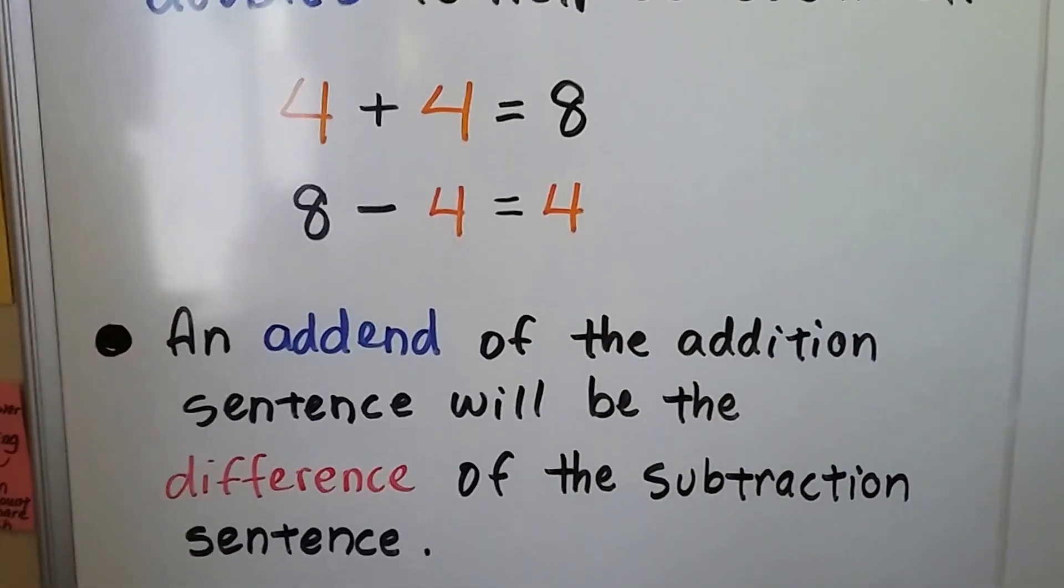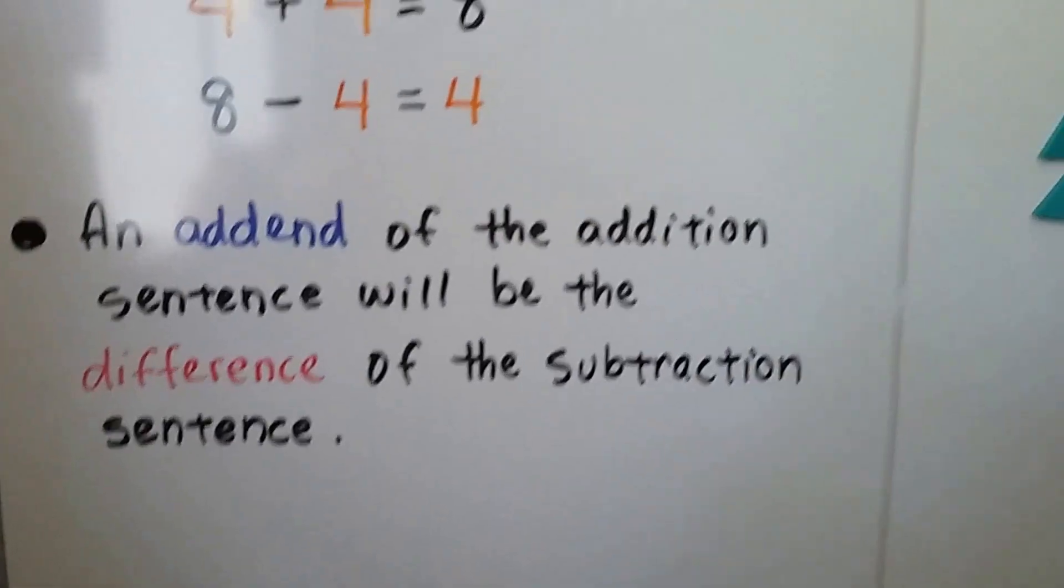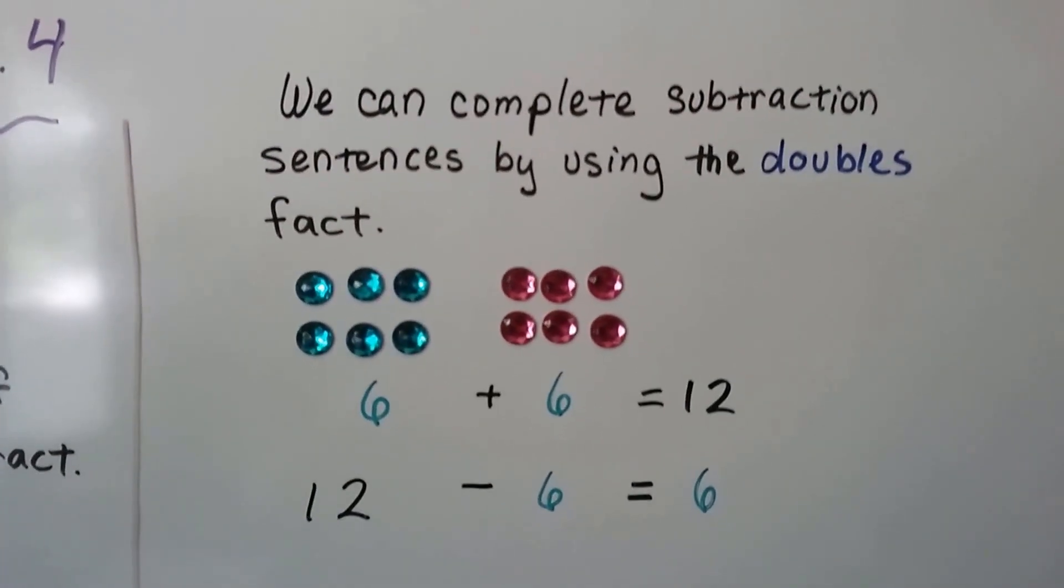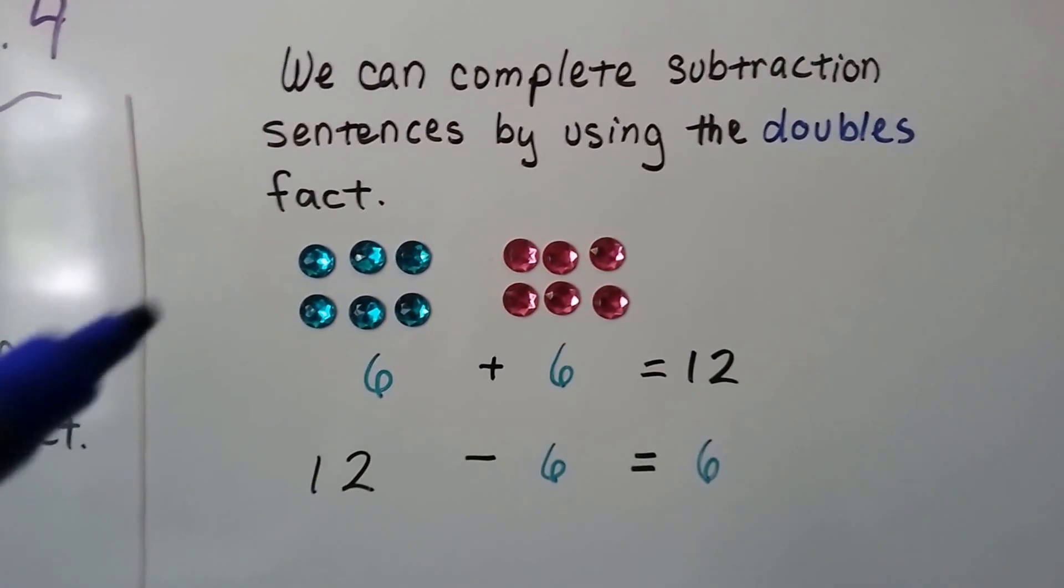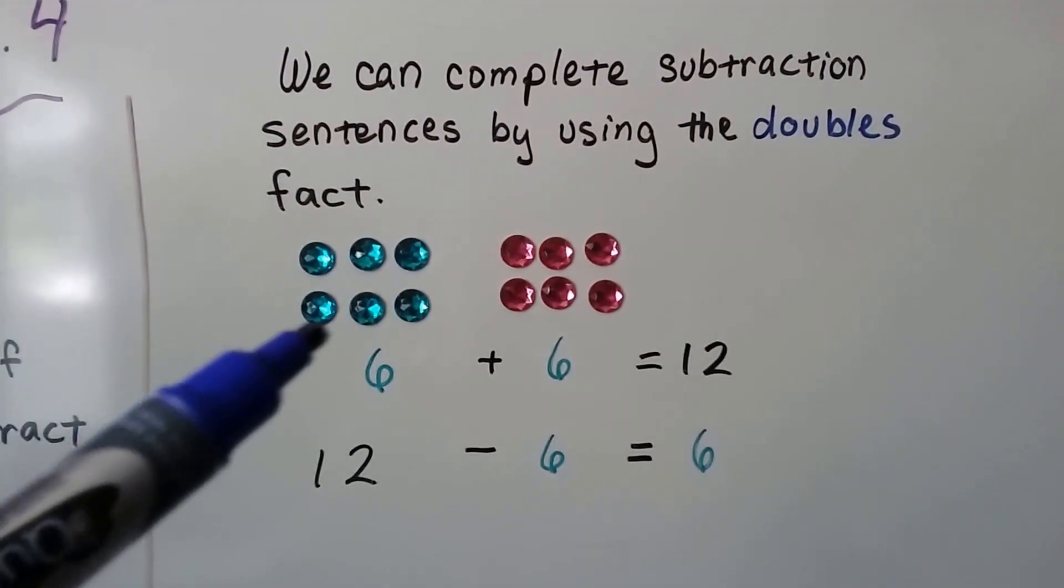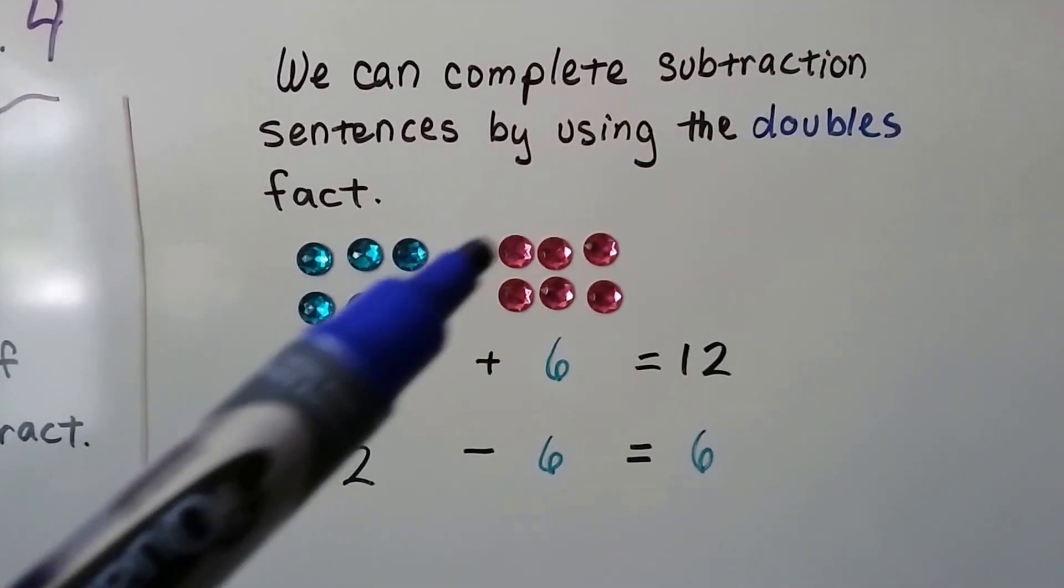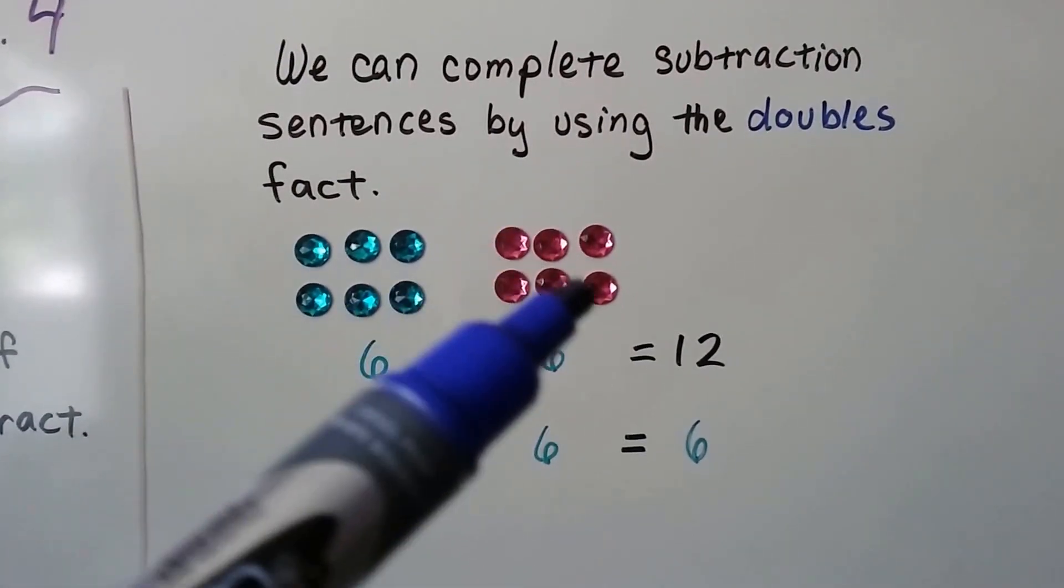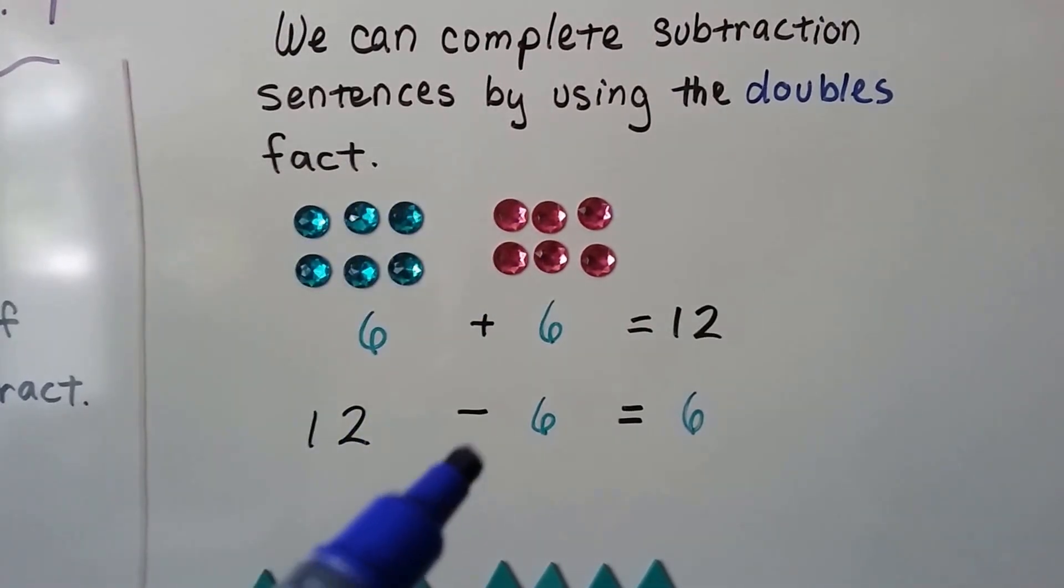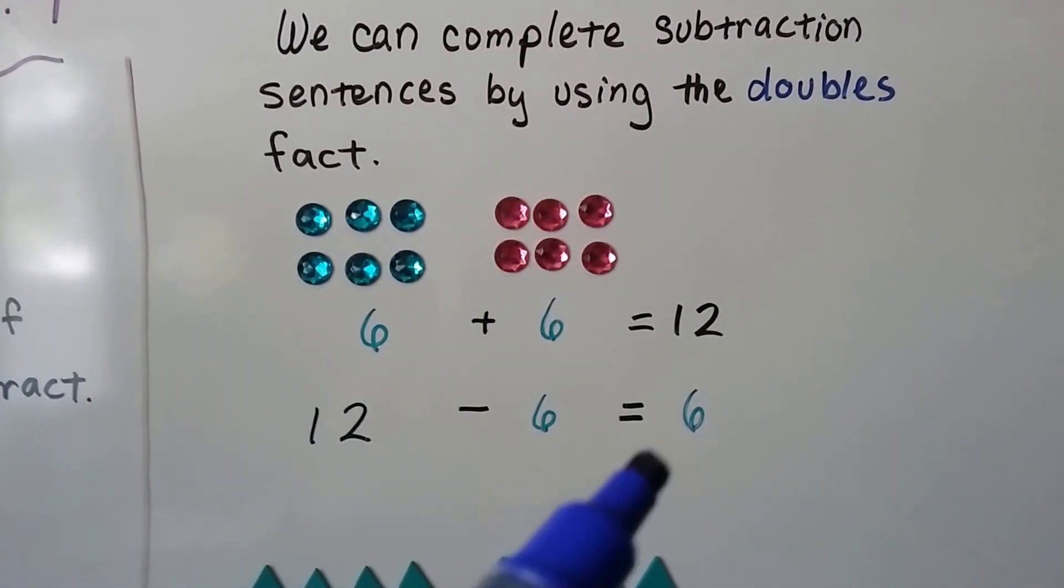We can complete subtraction sentences by using the doubles fact. 6 blue gems plus 6 blue gems, we can count on: 6, 7, 8, 9, 10, 11, 12 is 12 gems. 12 gems minus 6 gems will equal 6 gems.